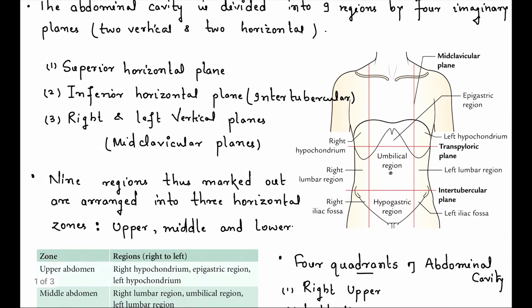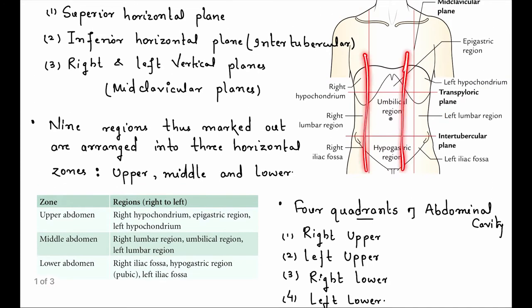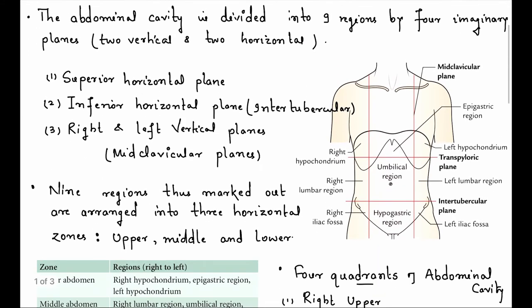Nine regions of abdominal cavity, which are made from four imaginary lines. Right hypochondrium, left hypochondrium, epigastric region, umbilical region, hypogastric, right lumbar, left lumbar, right iliac, and left iliac.